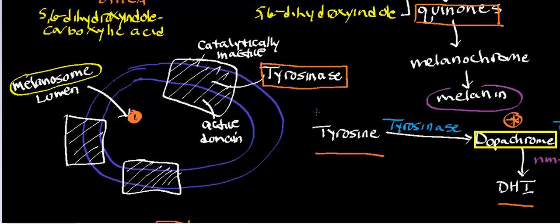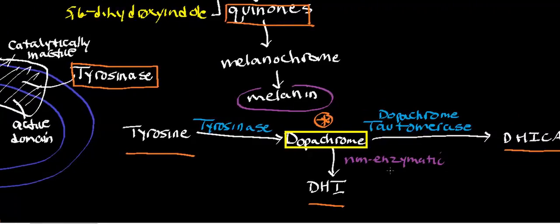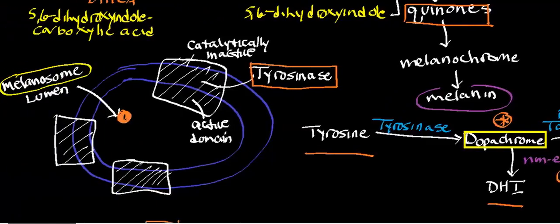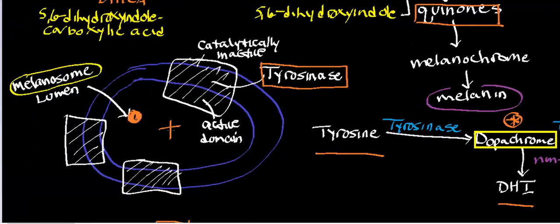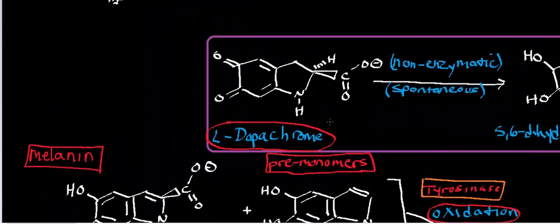In another video we'll look at how keratinocytes actually get the melanin and the mechanism of how that occurs. But in this video, I want to talk about this particular non-enzymatic conversion of dopachrome into dihydroxyindole, and discuss a little bit about the organic chemistry of why it happens. Keep in mind that this reaction — like dopachrome tautomerase and tyrosinase — occurs inside the lumen of the melanosome.